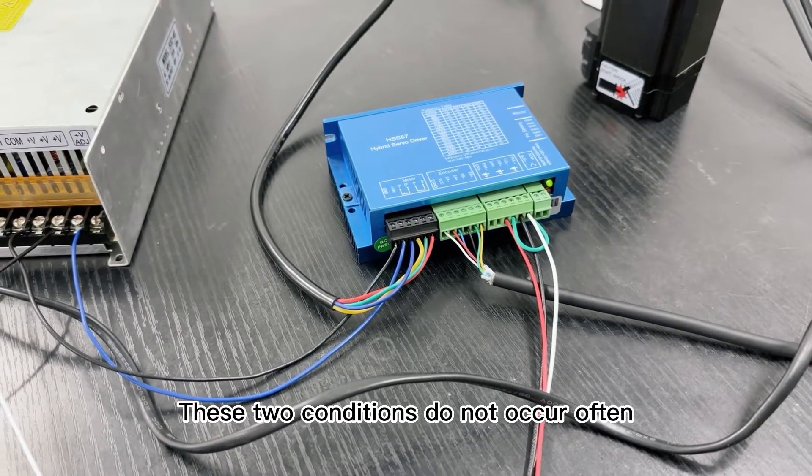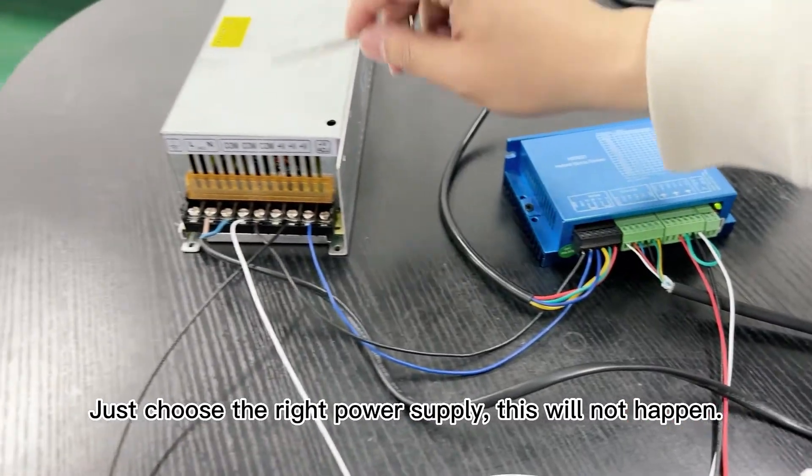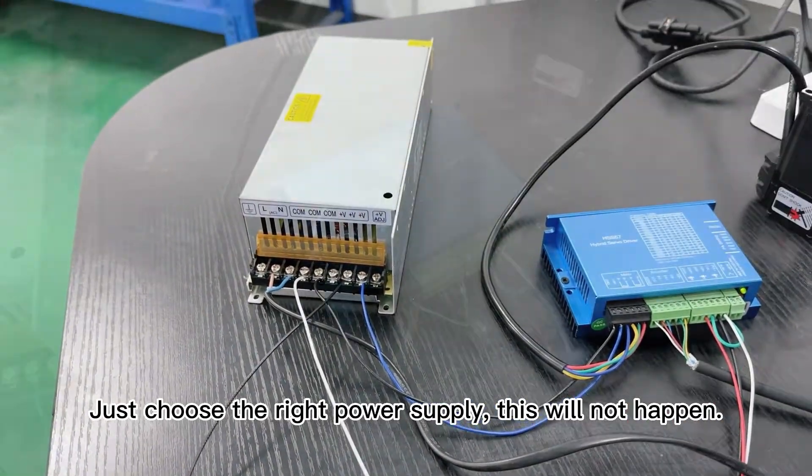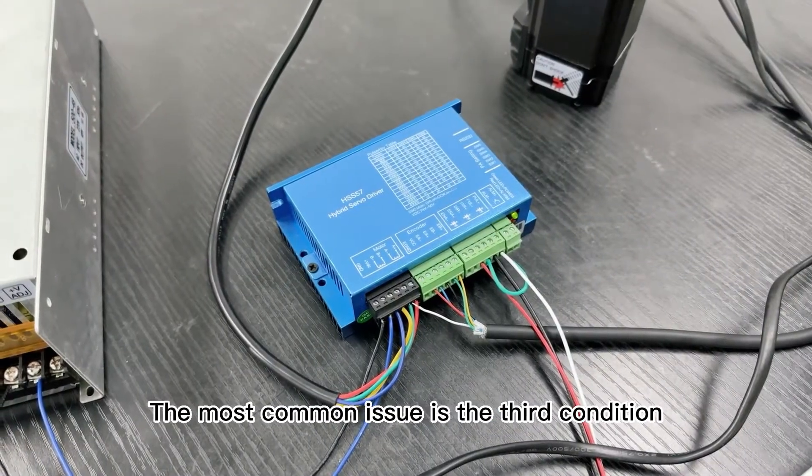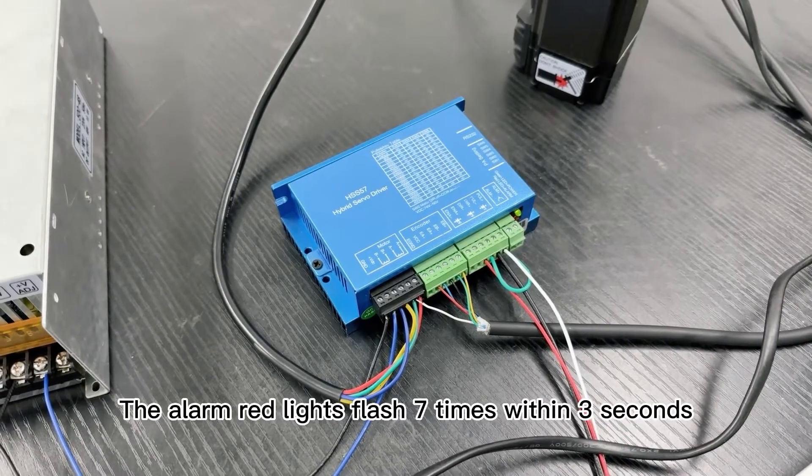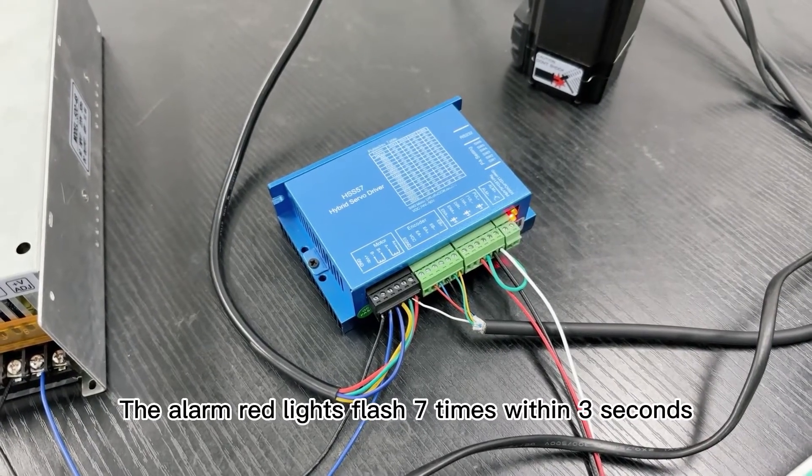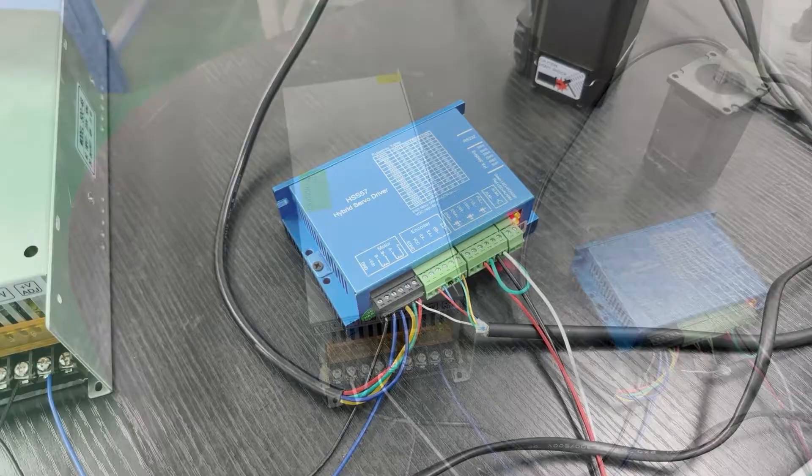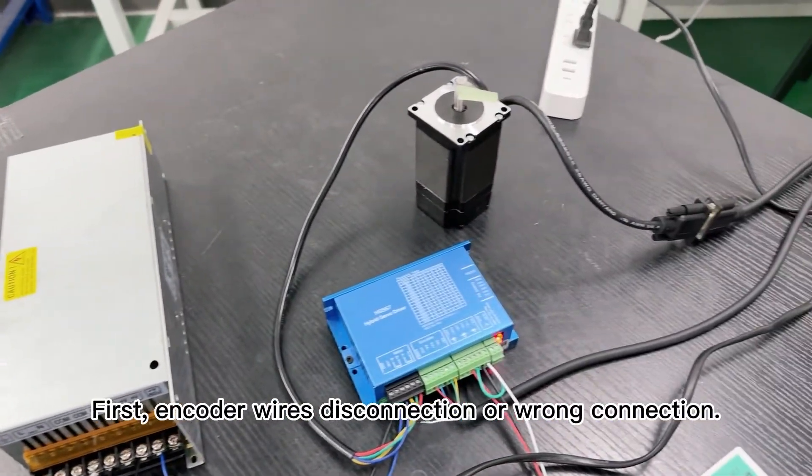These two conditions do not occur often. Just choose the right power supply and this will not happen. The most common issue is the third condition: the alarm red light flashes seven times within three seconds. This problem occurs for two reasons.